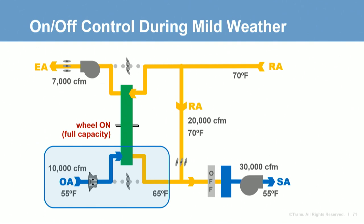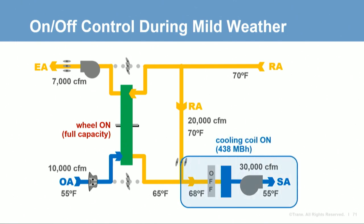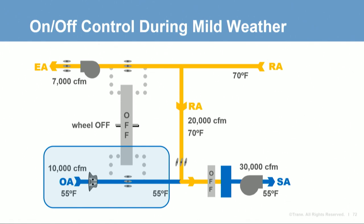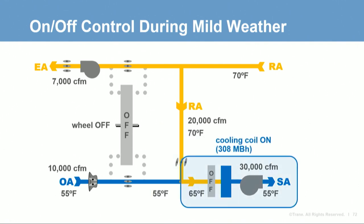Instead, if we turn the energy recovery device off, with no energy transferred the 55-degree outdoor air mixes with recirculated air for a mixed air temperature of 65 degrees. With the wheel off, the cooling coil needs to cool the air only 10 degrees. Therefore, at this condition, operating the energy recovery device would actually cause the system to use more cooling energy — 13 degrees of cooling with the device on versus 10 degrees with it off.